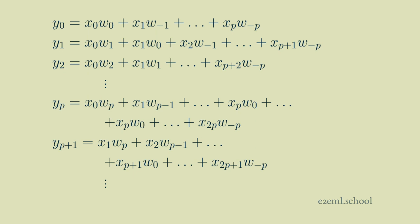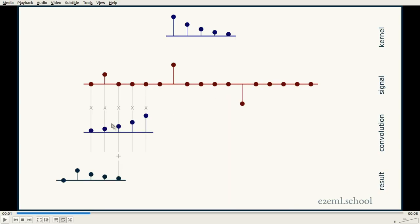But this shows going all the way from counting from w p to w minus p, and from x sub zero to x sub two p. So this is a full, fully overlapped, fully valid convolution.